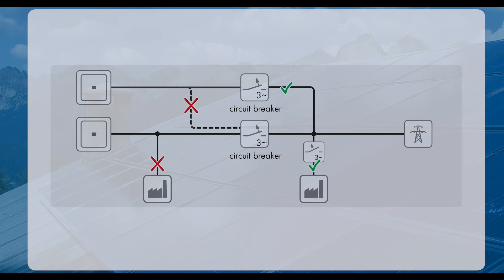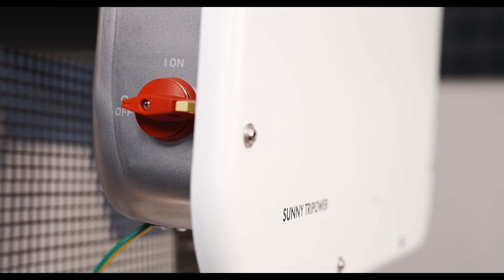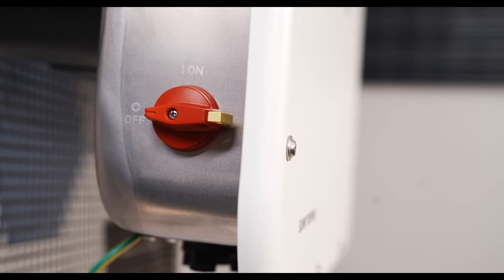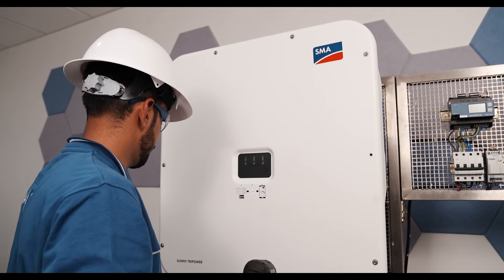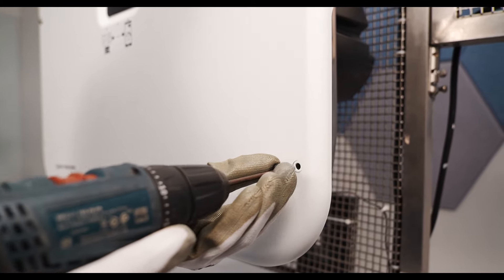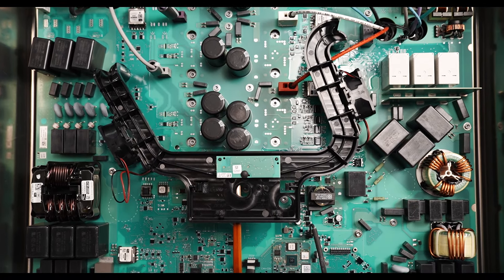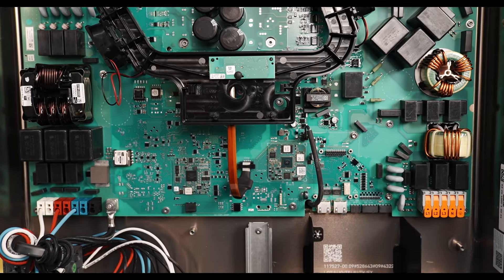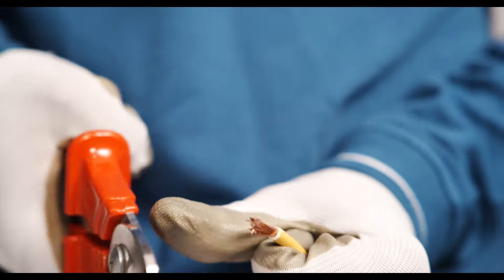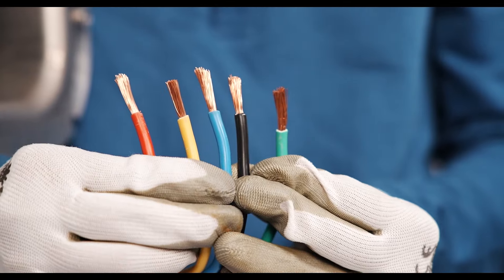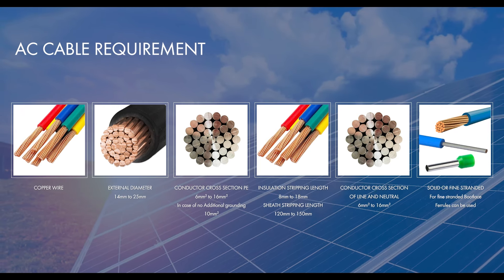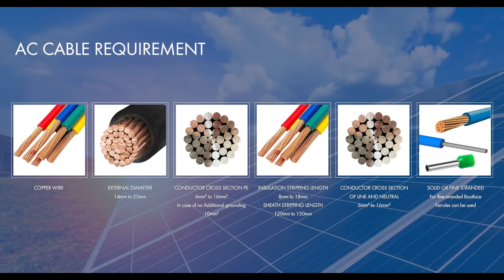Disconnect the AC miniature circuit breaker from all three line conductors and secure it against free connection. Ensure that all four DC load brake switches are switched off. Remove all front screws and open the front cover. Strip the insulation of the phases and the grounding conductor approximately by 20 mm. AC cable requirement is crucial, so ensure the following criteria are precisely met.